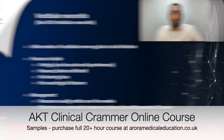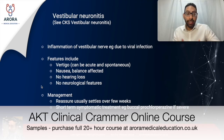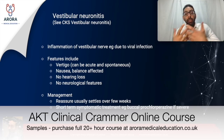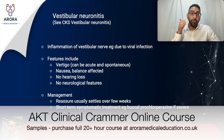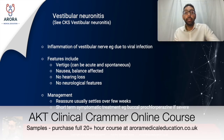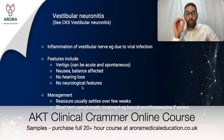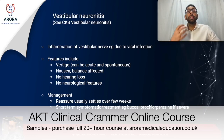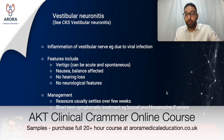Vestibular neuronitis is inflammation of the vestibular nerve, typically due to viral infection. Features include acute and spontaneous onset vertigo, nausea, and balance disturbance. Importantly, there is no hearing loss in vestibular neuronitis, which helps differentiate it from labyrinthitis, and there are no neurological features. Management involves reassurance that it will generally settle over a few weeks, with short-term symptomatic treatment such as buccal prochlorperazine for severe symptoms.